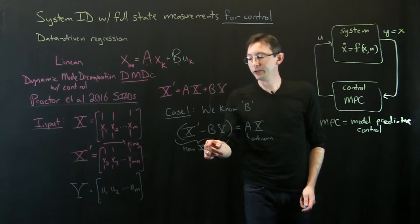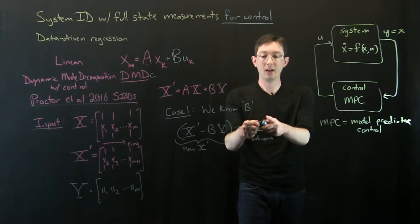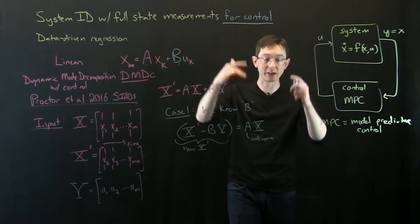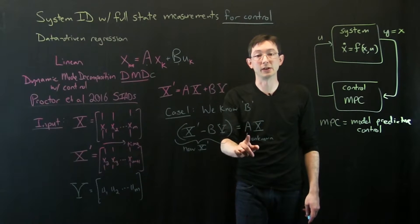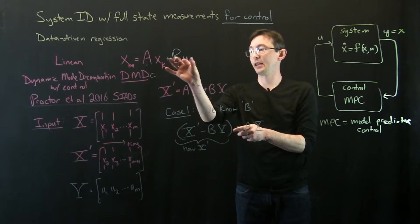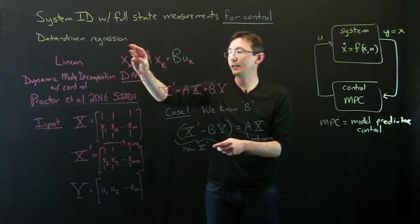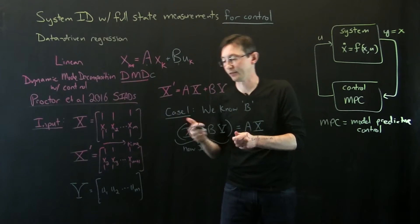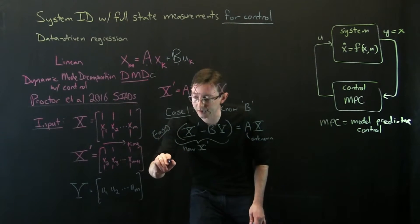You can essentially do the original DMD procedure, but using this new modified X prime, this X, and you can solve for A. In particular, if this is really high dimensional, you can solve for the leading eigenvalues and eigenvectors. You can solve for A for reduced representation, which is the normal DMD. So case one, if we know the B matrix and we also have these measurements of what the control input is in time, we can just subtract this over and solve for A just like we would in regular DMD. So this is kind of the easy case.